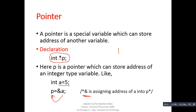We can understand this with the help of this example. Suppose this is a block which is a, its value is 5 and its address is 101. Now if we try to assign the address of a into a pointer, the pointer also occupies some amount of memory. If we assign the address of a, it becomes the value of p. So the value of p is 101, which is the address of a. We can draw a line like this — address of a is inside pointer p.